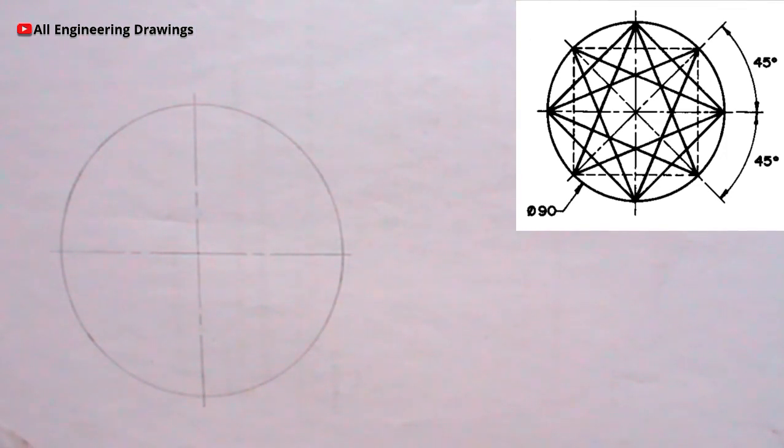I will also draw diagonal lines passing through the center of the circle. I will do so using my 45 degree set square.